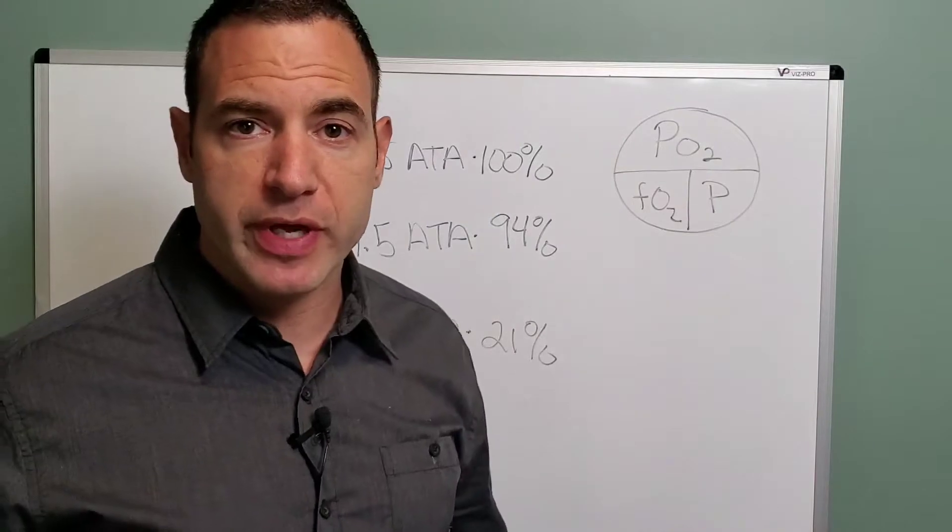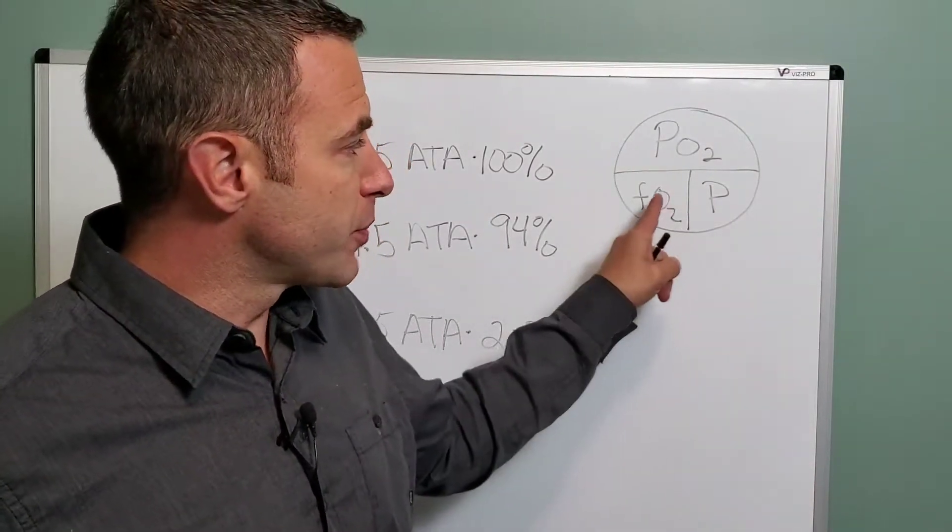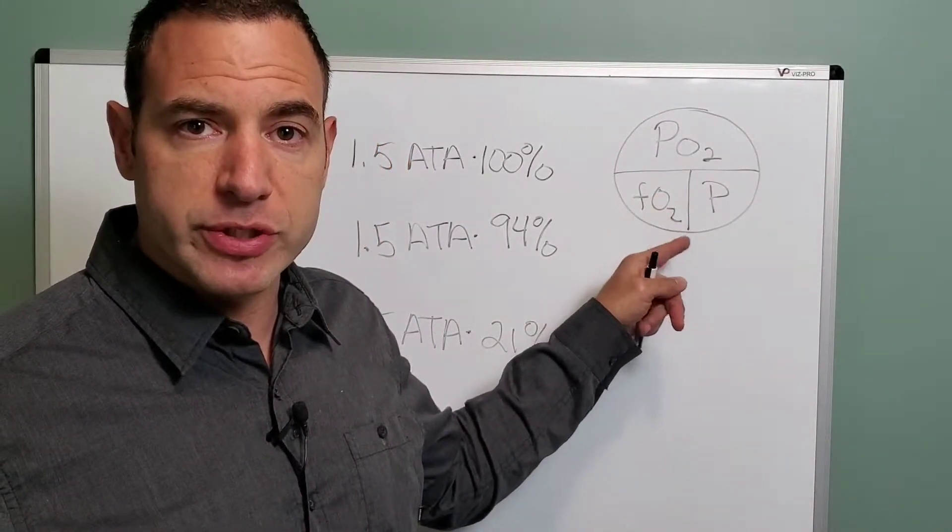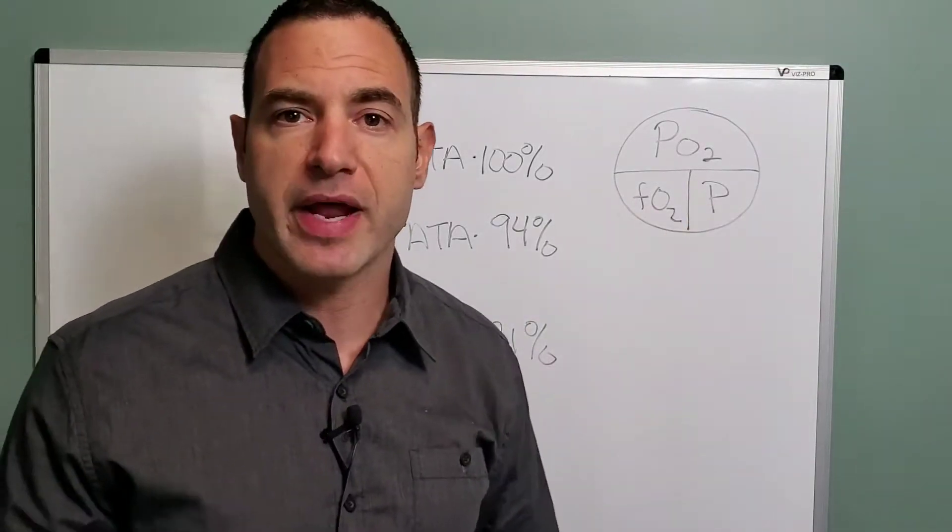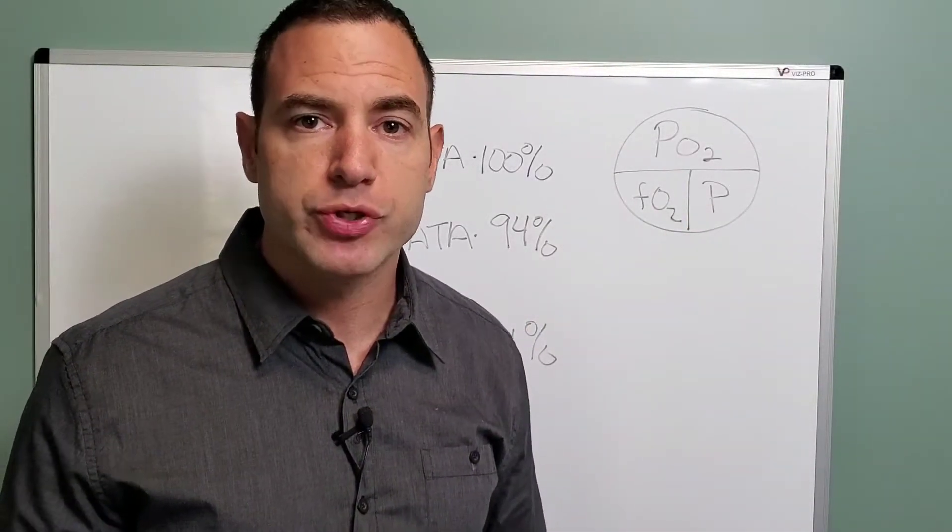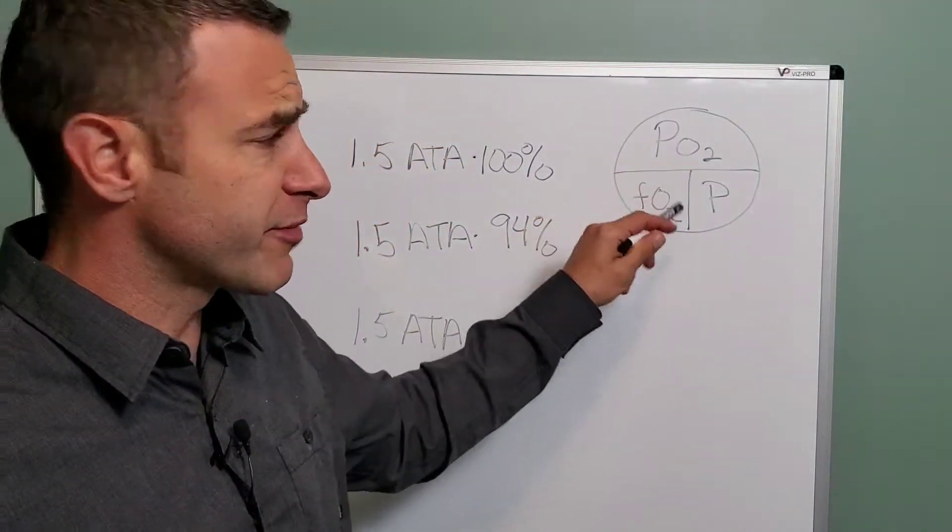So the PO2, the pressure of the oxygen, is equal to the percentage, the fraction of the oxygen, the percentage of the oxygen in the mixture that you're breathing, times the pressure that oxygen is being exposed to. So PO2 equals FO2 times P.